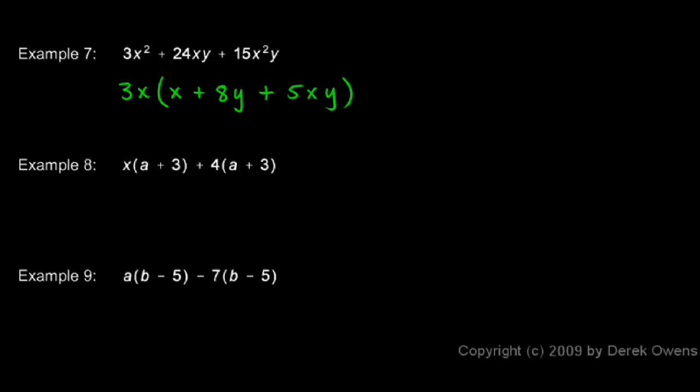So I can factor out the a plus 3. So I can have x times a plus 3 plus 4 times a plus 3. And that can be written as x plus 4 times a plus 3. And that's it. That's the answer.